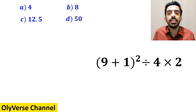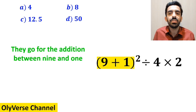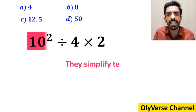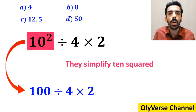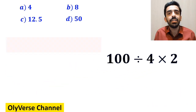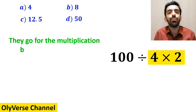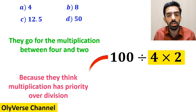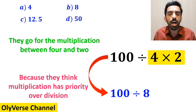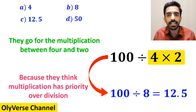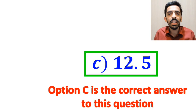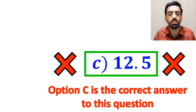In the next step, they go for the addition between 9 and 1, simplifying this expression to 10 squared divided by 4 multiplied by 2. Then they simplify 10 squared and rewrite this as 100 divided by 4 multiplied by 2. In the final step, they go for the multiplication between 4 and 2 first, believing multiplication has priority over division, writing 100 divided by 8, which gives them 12.5. They conclude option C is correct — but we have been tricked again, and it's not the correct answer.